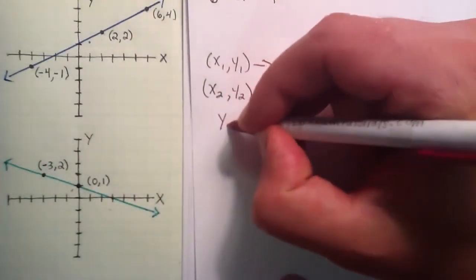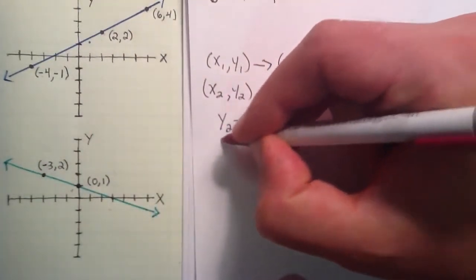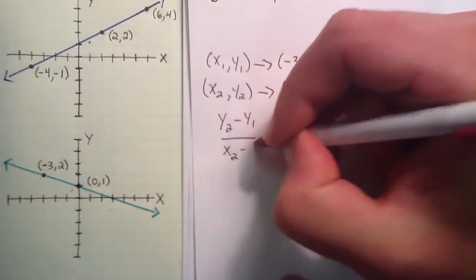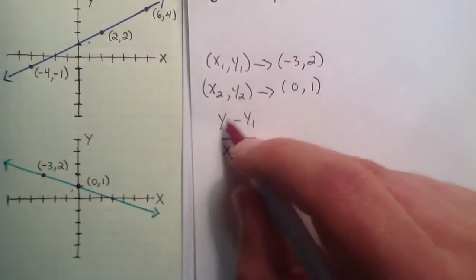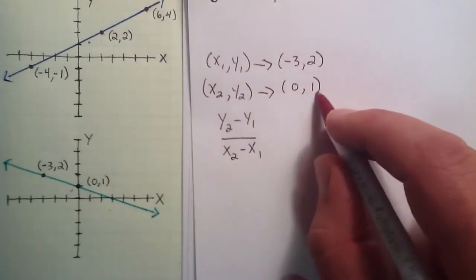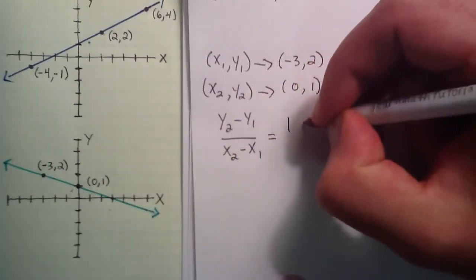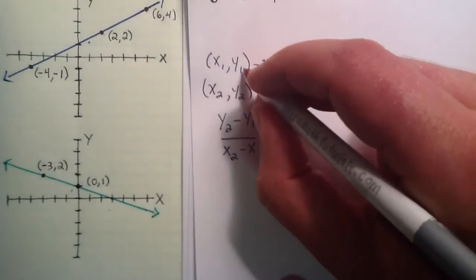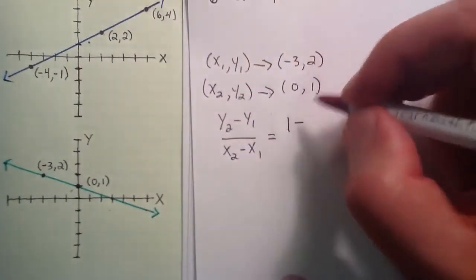So once again we want to do y2 minus y1 divided by x2 minus x1. y2 is the right hand side of this point, or 1. And then we subtract the y1, which is the right hand side of this point, or 2.